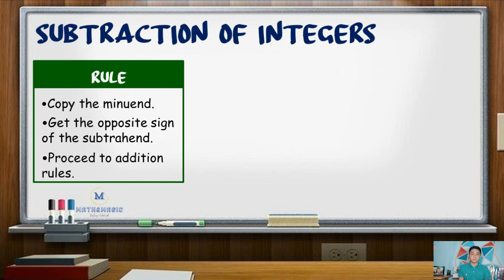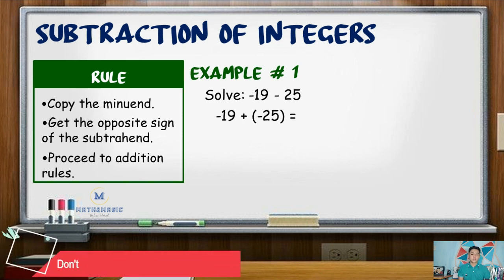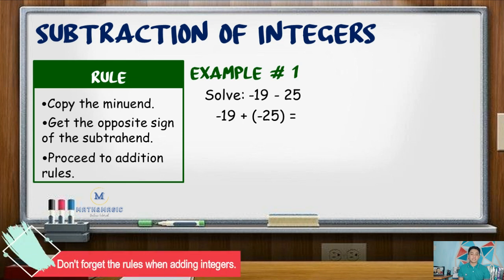For our first example, negative 19 minus positive 25. We copy the minuend, negative 19, and change the sign of the subtrahend: positive 25 becomes negative 25. We then proceed to addition, giving us negative 19 plus negative 25.